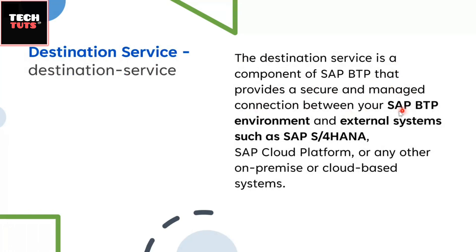The Destination Service is a component of SAP BTP that provides a secure and managed connection between your SAP BTP environment and external systems such as SAP S/4HANA, SAP Cloud Platform, or any other on-premise and cloud-based system. Inside our UI5 apps we consume APIs, and those APIs are deployed in some other system — S/4HANA, SAP Cloud Platform, or an on-premise system. The Destination Service maintains the connection between the BTP environment where our UI5 applications are deployed and the system from where we consume data.